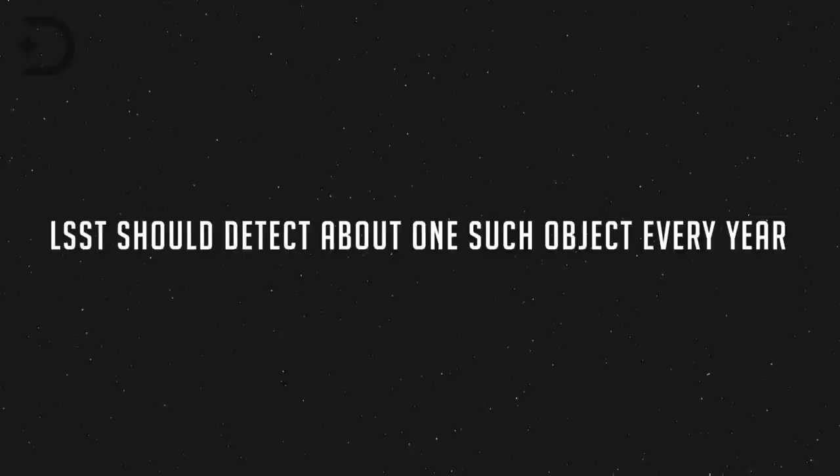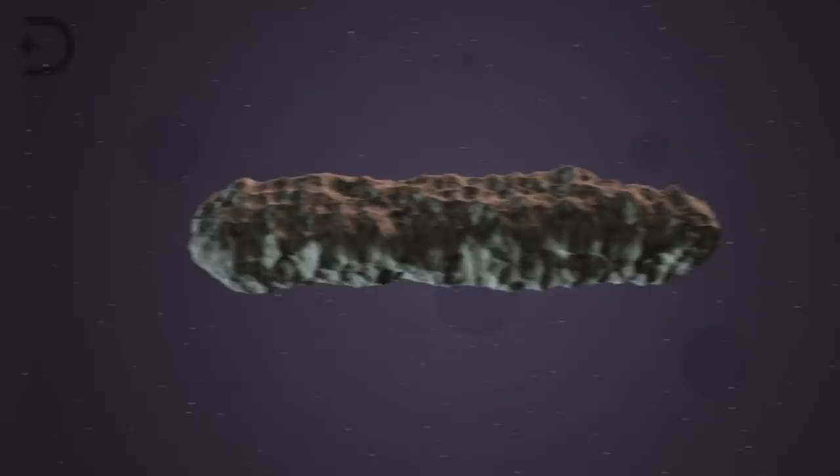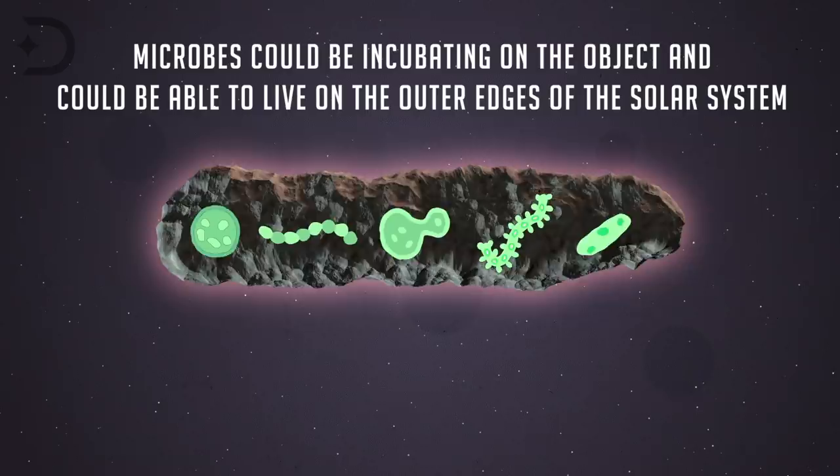It is thought that objects like Oumuamua could have brought life to Earth. One of the things that got scientists excited was the fact that the object had an outer crust of rock, which could have provided insulation and radiation shielding. Because of this, some researchers have said that microbes could be incubating on the object and could be able to live on the outer edges of the solar system.